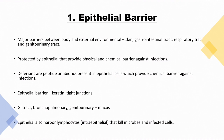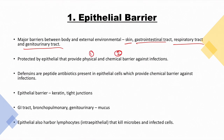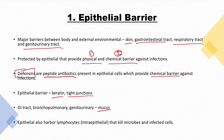The epithelial barrier is the major barrier between the body and the external environment. It is present in the skin, GI tract, respiratory tract, and genitourinary tract. The epithelial barrier provides physical and chemical barriers — defensins are peptide antibiotics that provide a chemical barrier against infections. It also contains keratin and tight junctions. The GI, bronchopulmonary, and genitourinary tracts have mucus as a barrier. Epithelial cells also harbor intraepithelial lymphocytes that kill microbes and infected cells.